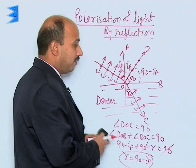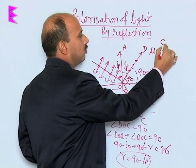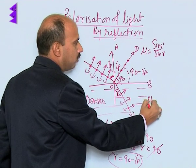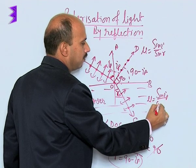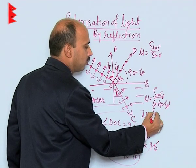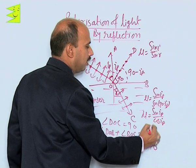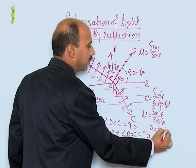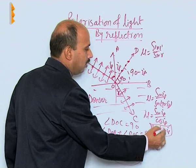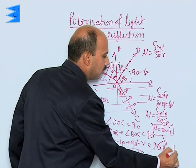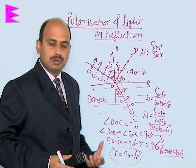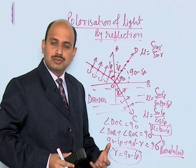We can now apply the refractive index. We can write mu equals sin(Ip) divided by sin(90 minus Ip), which simplifies to mu equals sin(Ip) divided by cos(Ip), giving mu equals tan(Ip). This is known as Brewster's Law: mu equals tan(Ip). This is one important concept where you can get exam questions based on this.